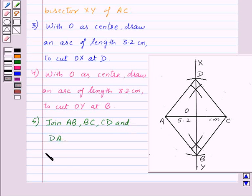And hence, ABCD is the required rhombus.